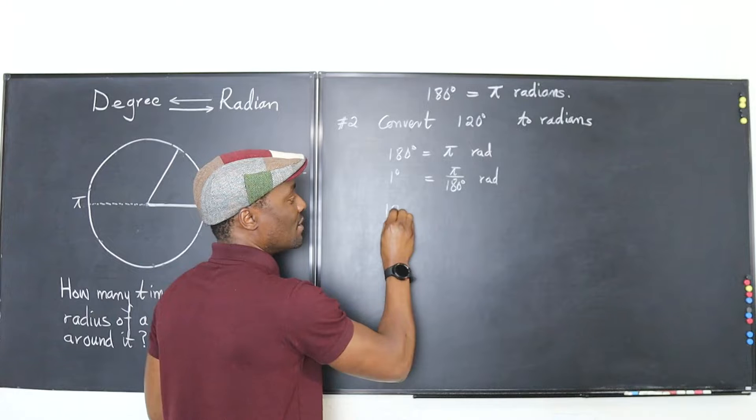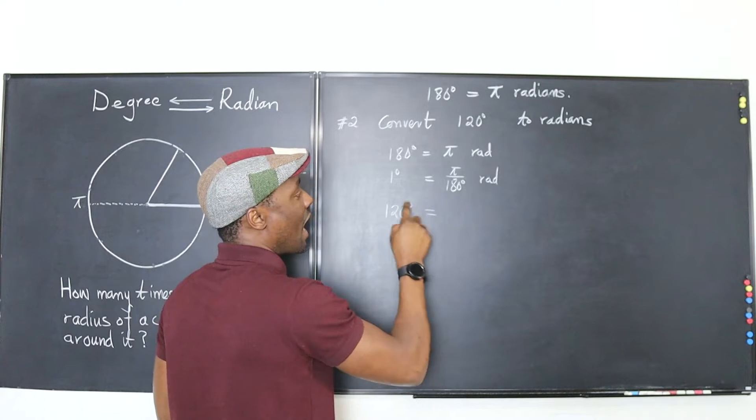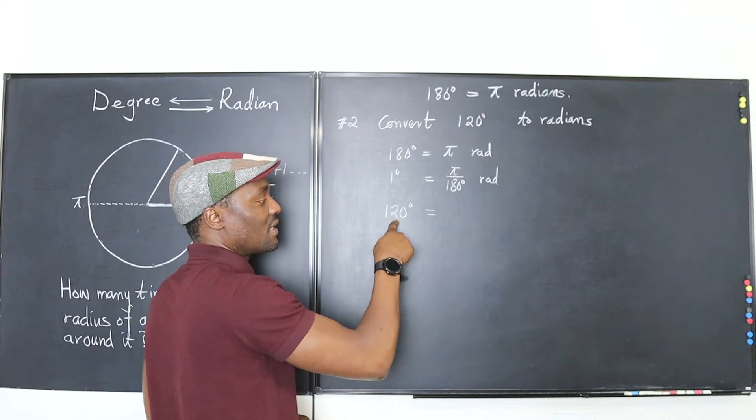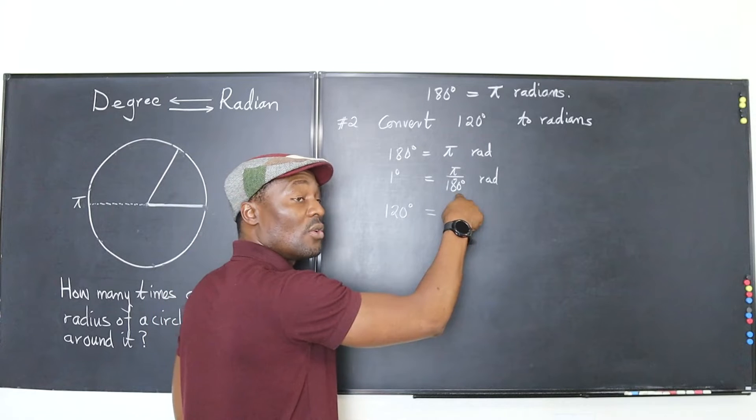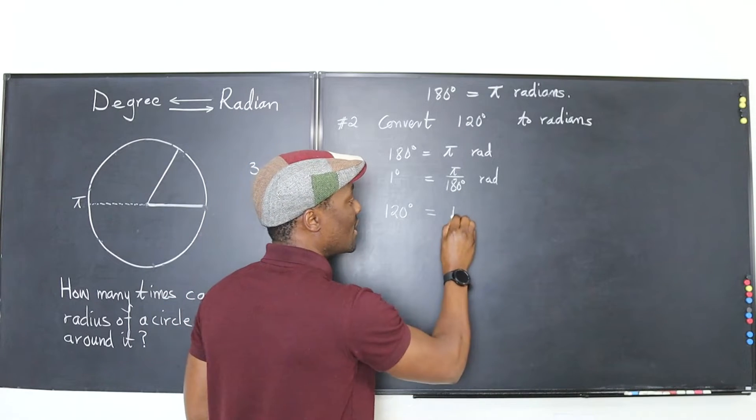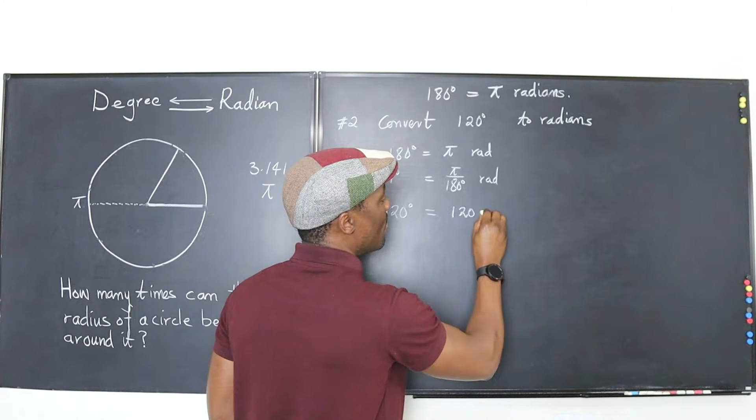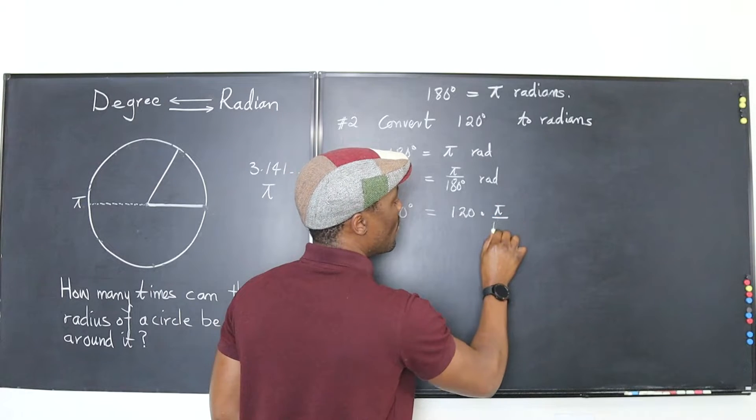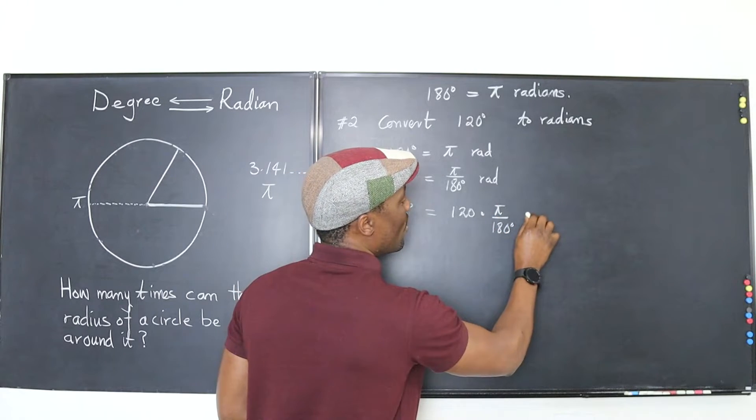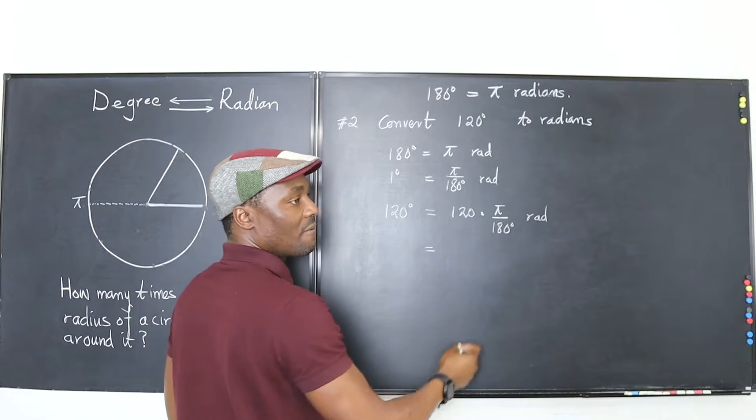Now the angle that I have is 120 degrees. I multiplied this by 120. That's how I got 120 degrees. So I have to multiply this too by 120. So that's 120 multiplied by pi over 180 degrees. That's the number of radians I have. And that's it.